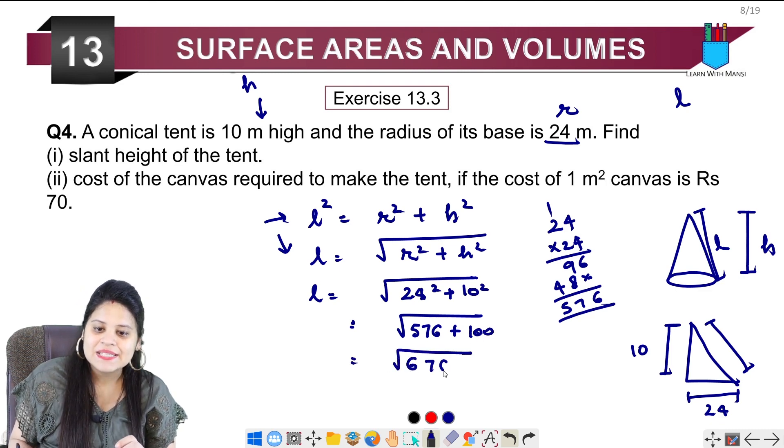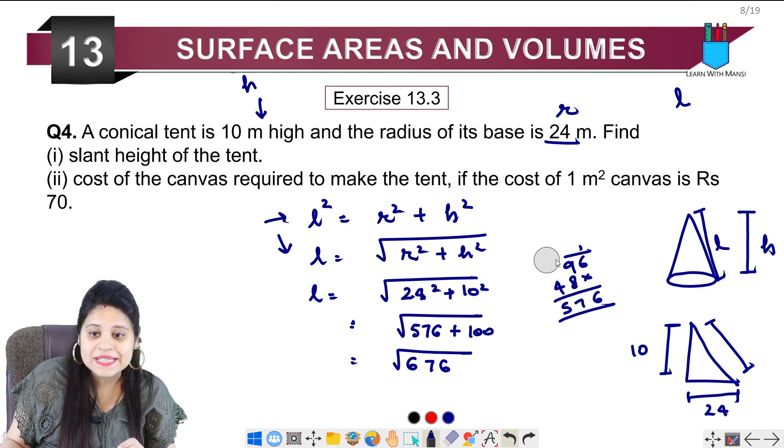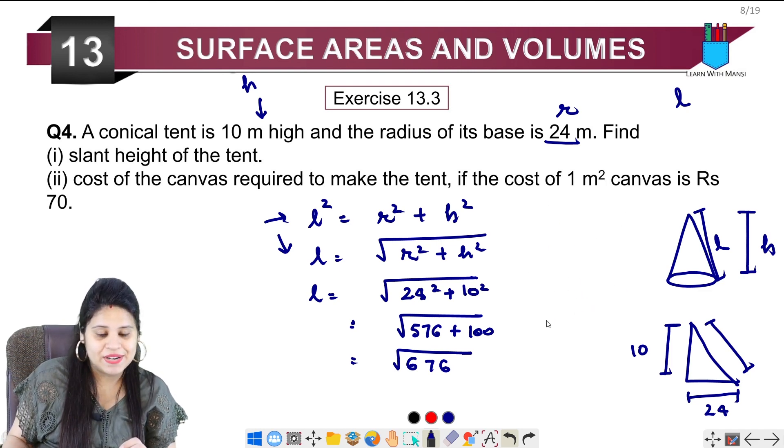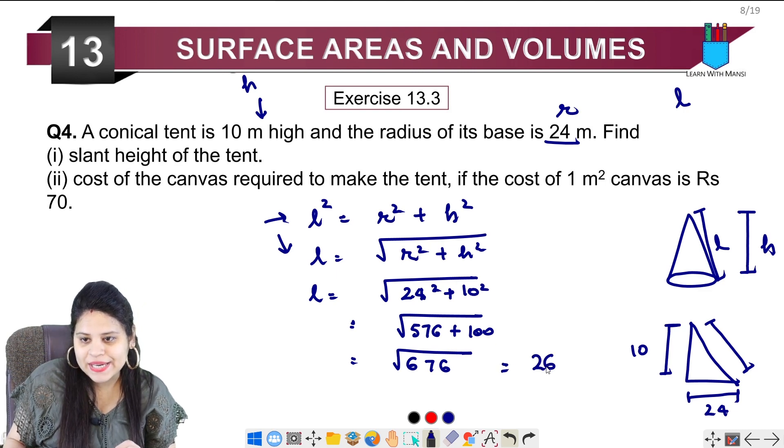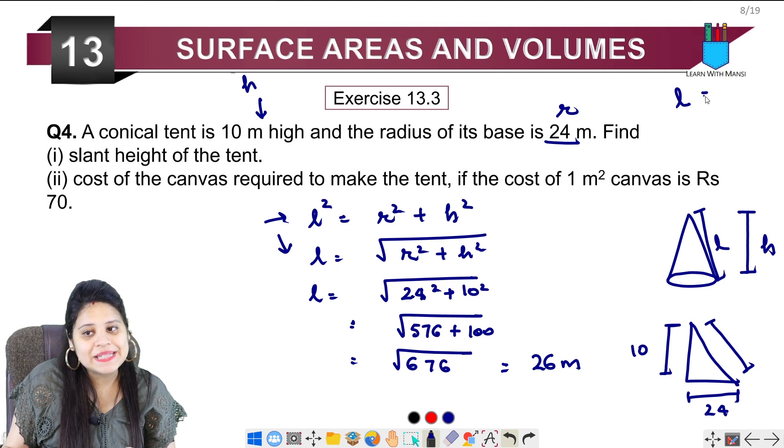Which means under root 676. So which square is 676? It's 26 square. So this is 26 meters. Now we have slant height.